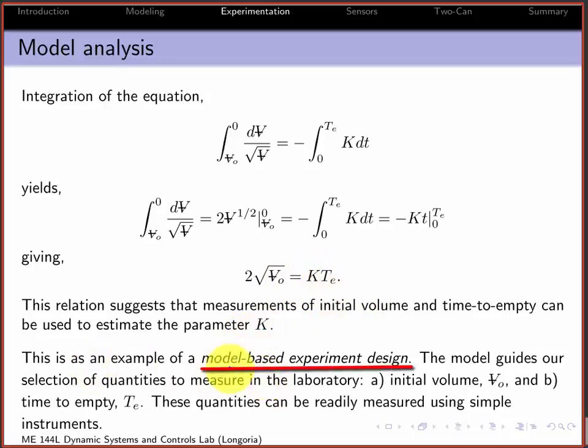This is why I call this sort of a model-based experiment design. Because you're using the model to tell you not only what to measure, but how to use it to get your K. And then you use that K back in your ODE to describe your system. So the model guides our selection of quantities to measure in the lab. And then these can be readily measured using simple instruments. You don't need anything very sophisticated to measure volume and time to empty.